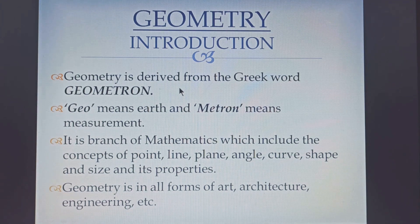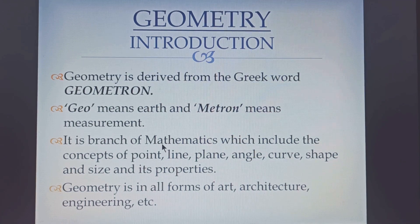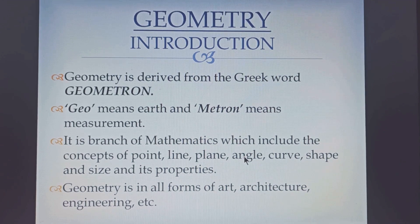Geometry is derived from the Greek word called Geometron. It has been broken into two parts. The word Geo means Earth and Metron means Measurement. It is a branch of mathematics, and in this we study about different concepts of point, line, plane, angles, curve, shapes and size of different objects and their properties.